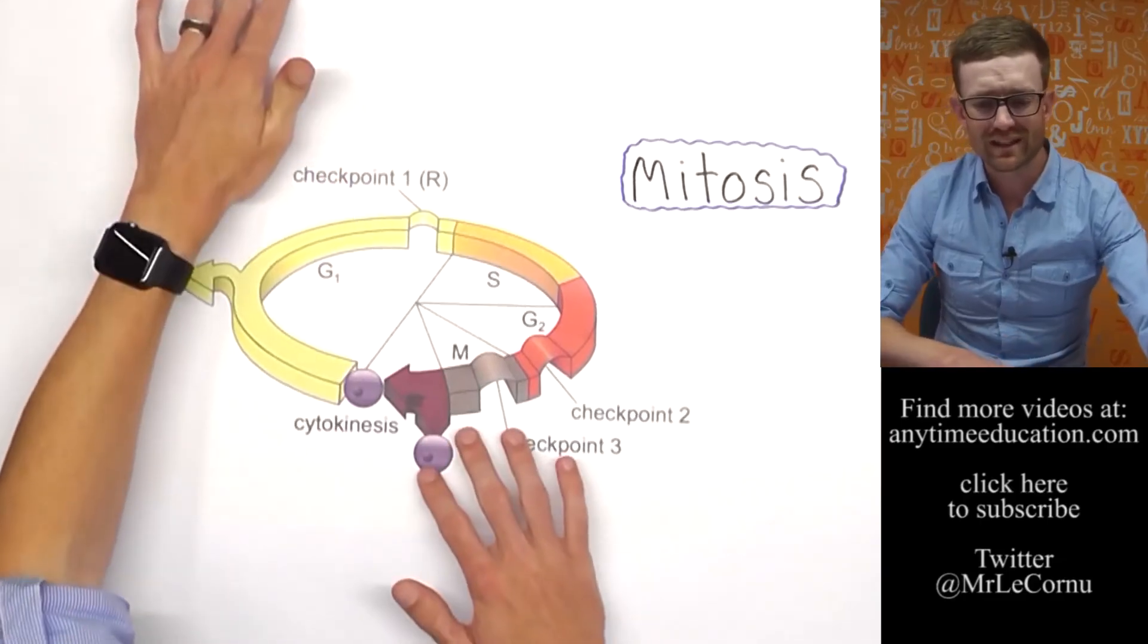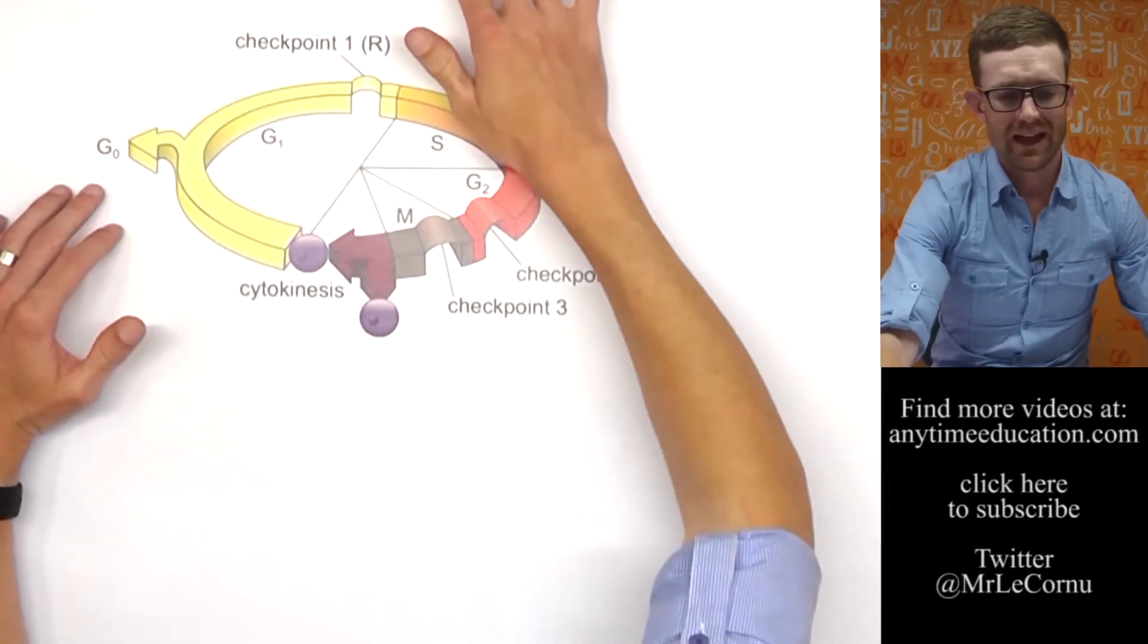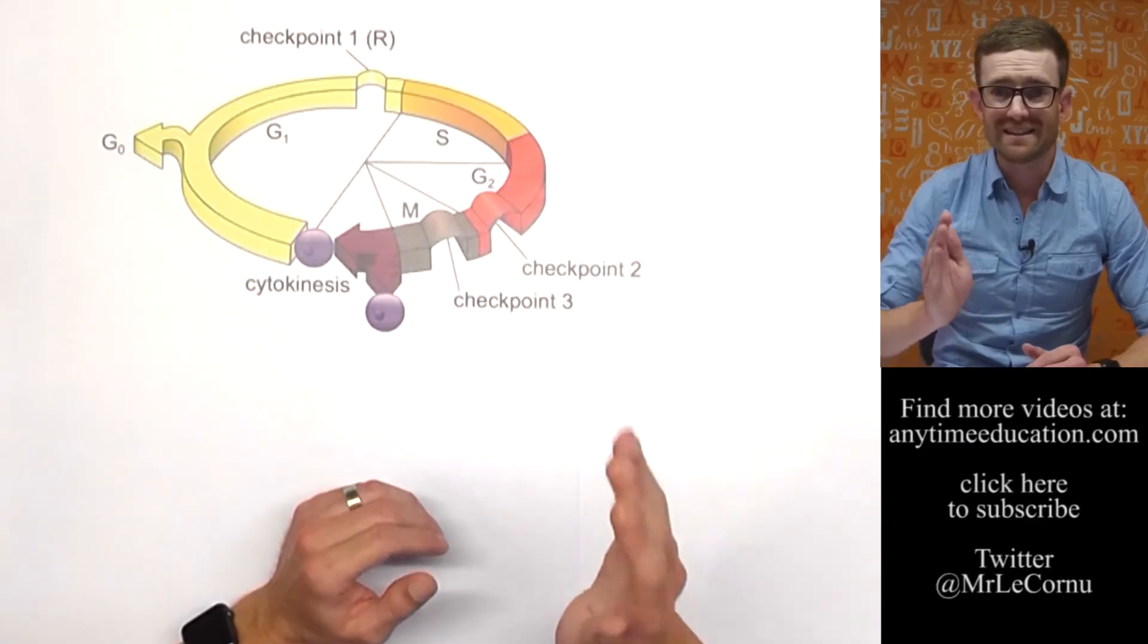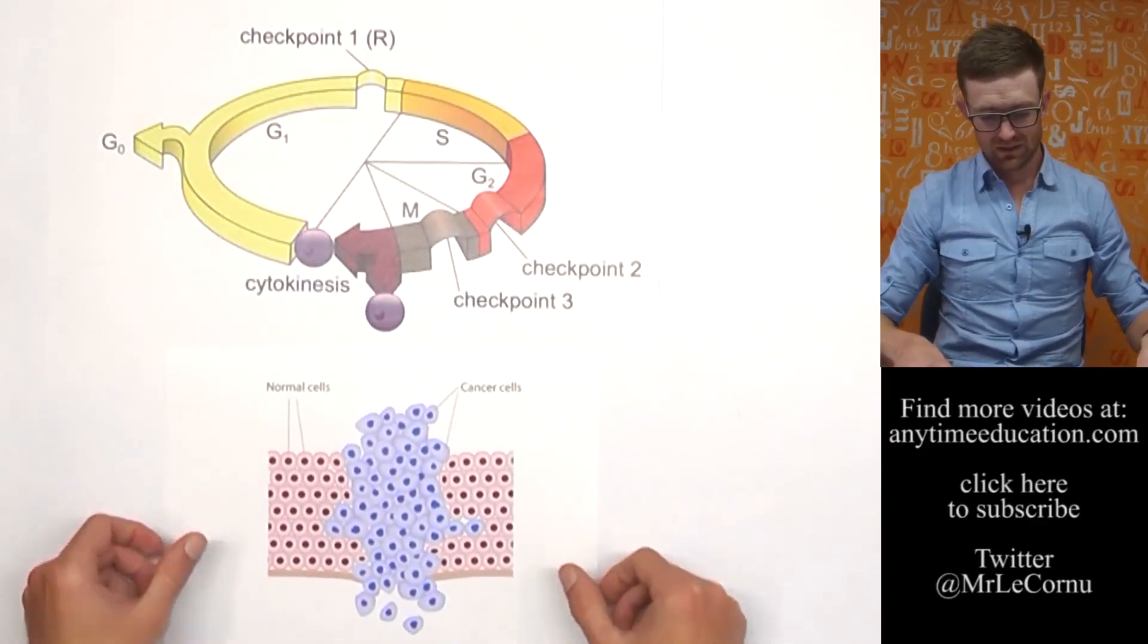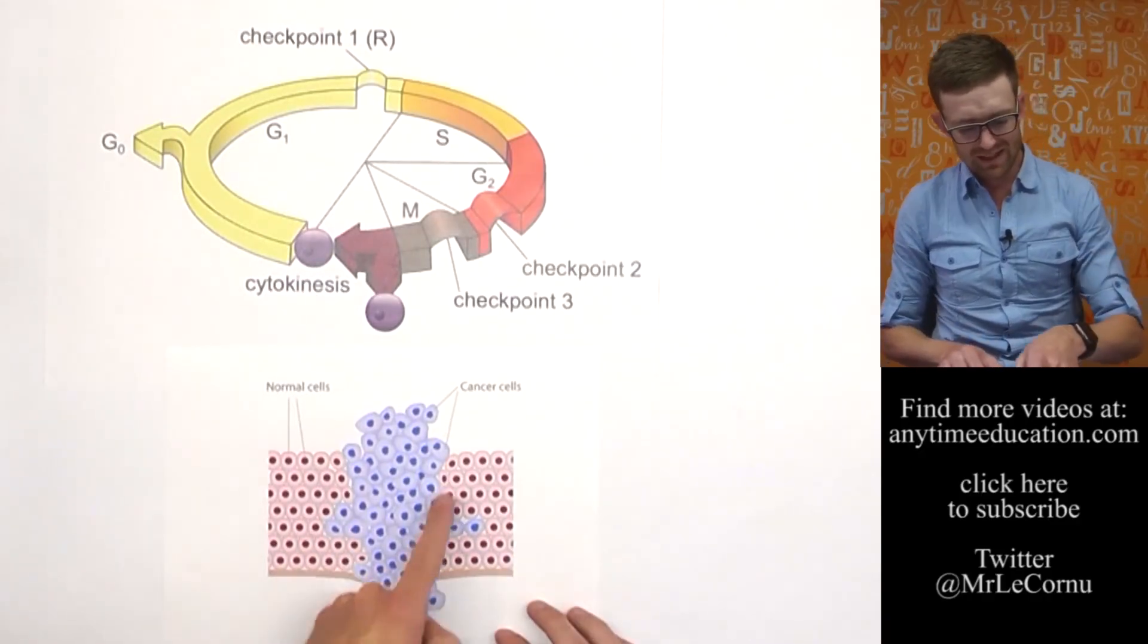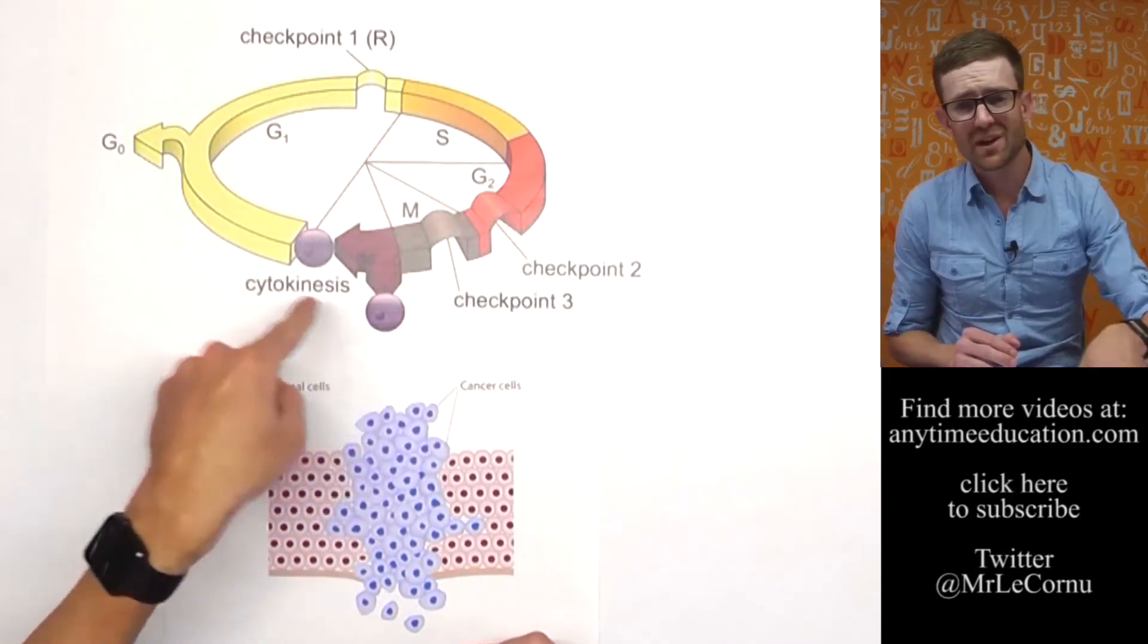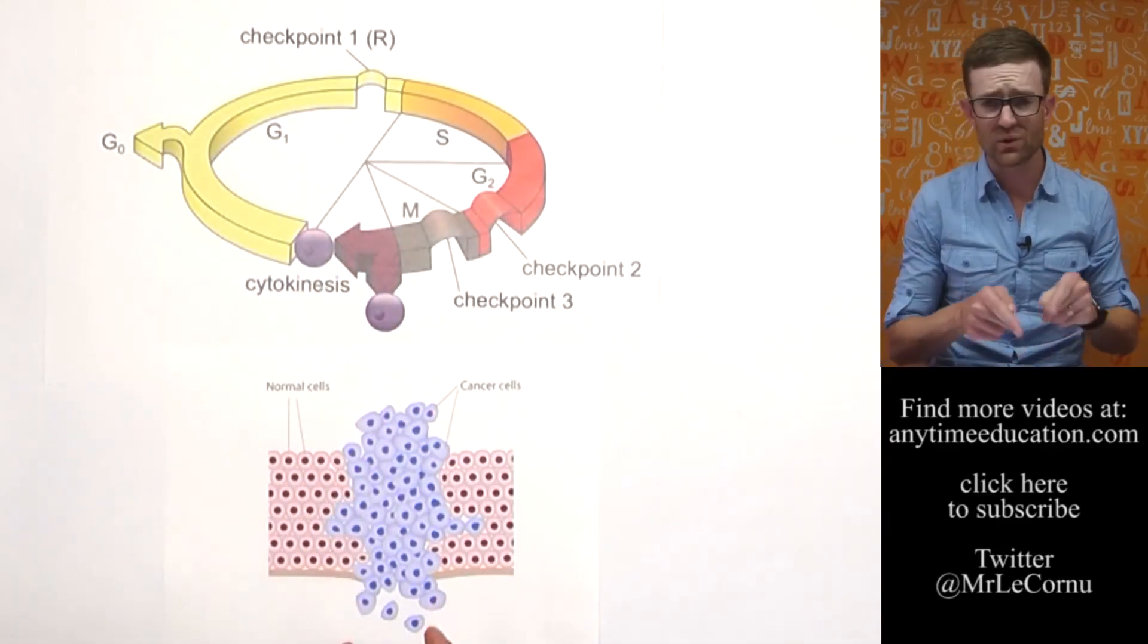Because if the cell cycle is not controlled and cells divide rapidly and uncontrollably, that is by definition cancer. Here we have an example of some normal cells and the cells found in a cancerous tumor. What happens in the case of cancer is for some reason we lose control of the cell cycle and cells start to divide rapidly and uncontrollably.